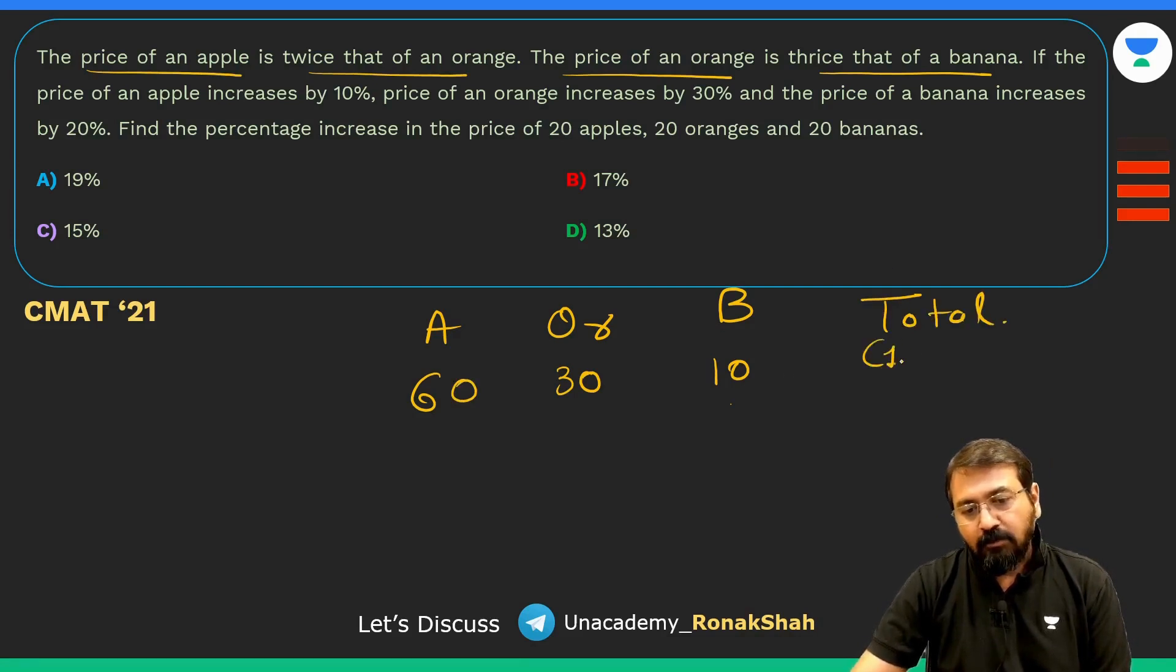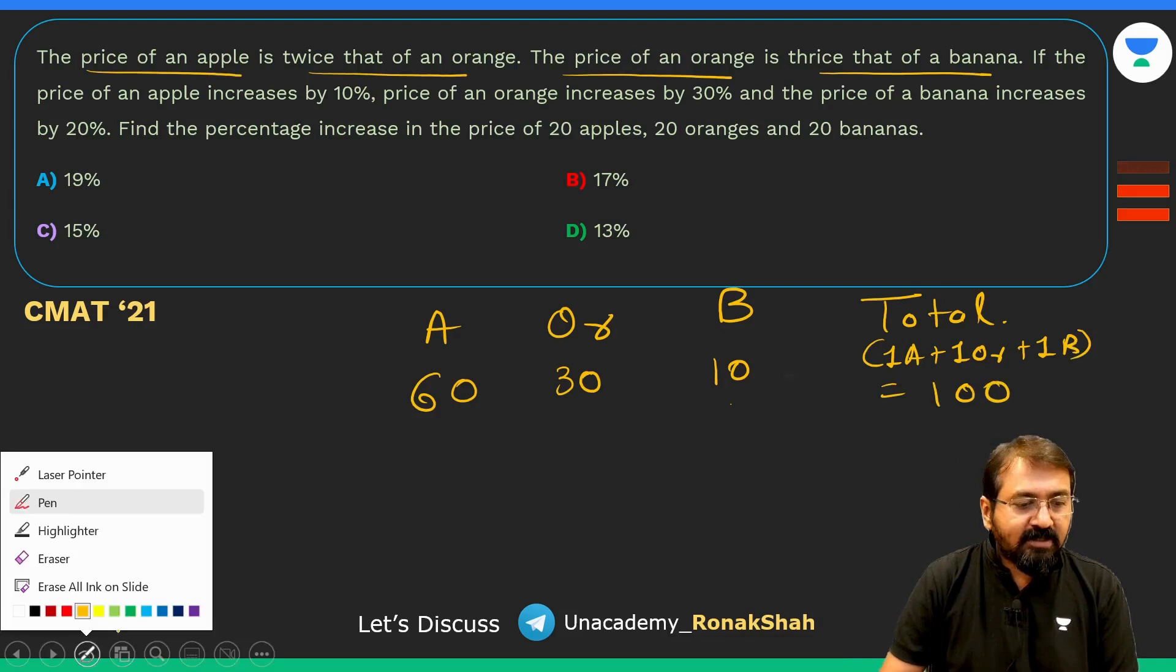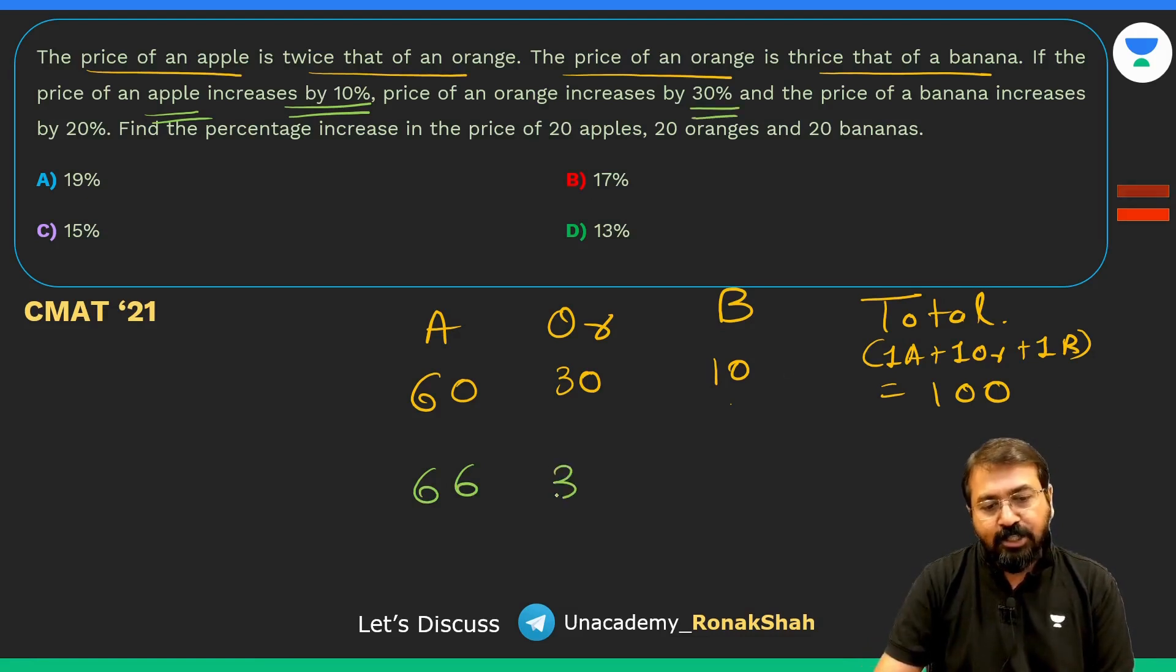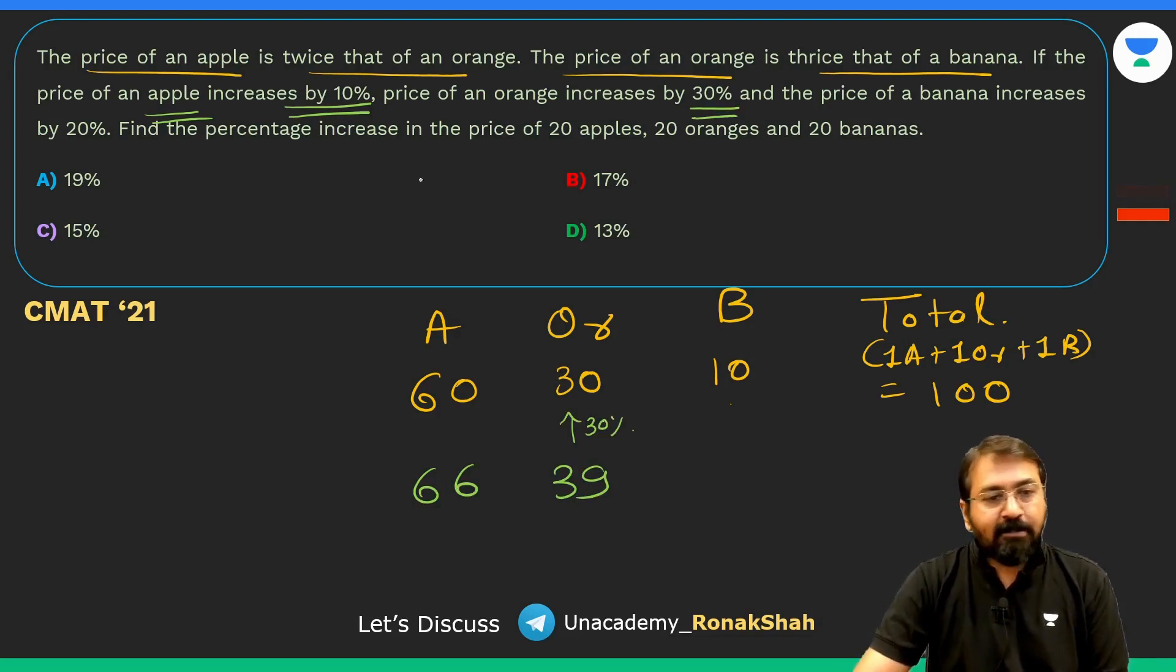So total price of one apple, one orange and one banana, it's going to be 100 rupees. Now what they are saying is there is a 10% increase in the price of apple, so this will become 66. 30% increase in the price of orange, so this will become 39, because we are increasing this value by 30%. And banana increased by 20%, so this will become 12. So new price will be how much? 9 plus 6 is 15, plus 12 is 27.